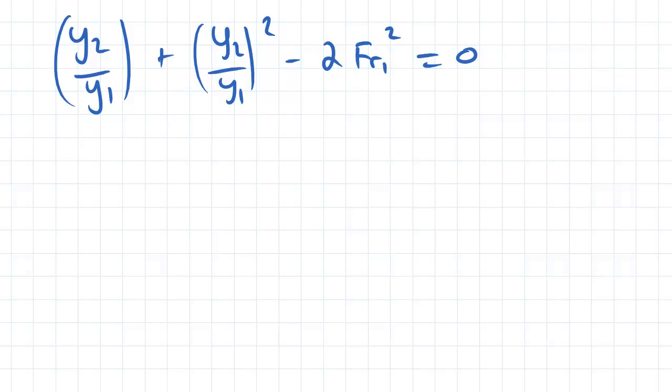y2 over y1 plus y2 over y1 squared minus 2 Froude number squared equals 0. So we're going to use this to produce our first equation for hydraulic jump. If you can see, this is actually a quadratic equation of variable y2 over y1.